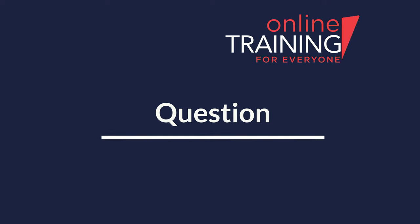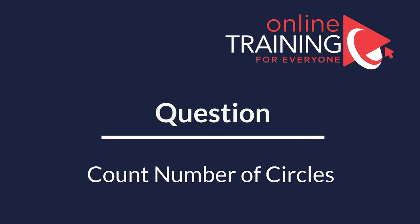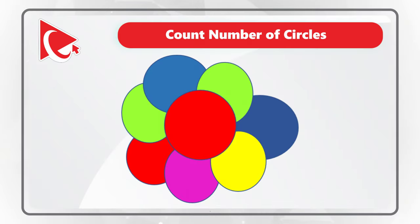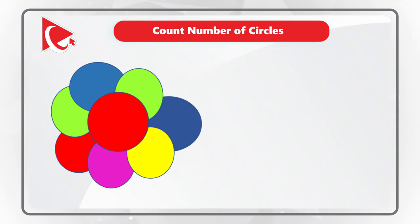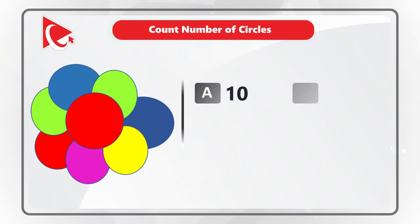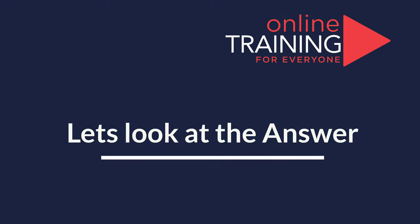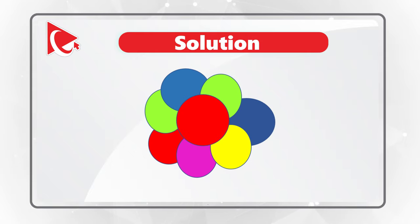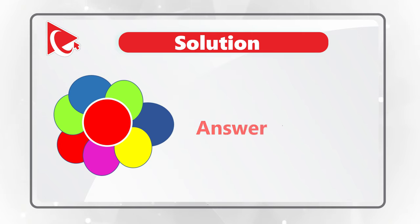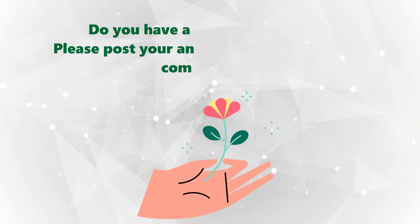In this interesting but tricky question, you need to count the number of circles. You're presented with an unusual shape and four choices: choice A is 10 circles, choice B is 11 circles, choice C is 2 circles, and choice D is 1 circle. Give yourself a little time to count correctly. As I told you, this was tricky — there is only one circle in the middle. The other shapes are ovals and shapes of different kinds. Watch out for these types of unusual and tricky questions on the test.